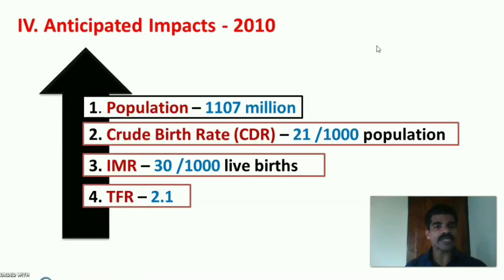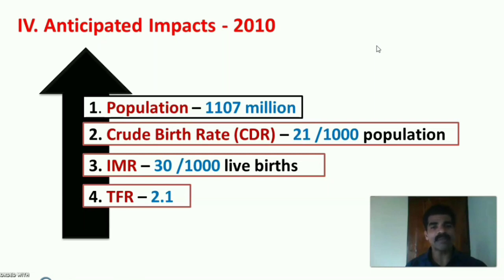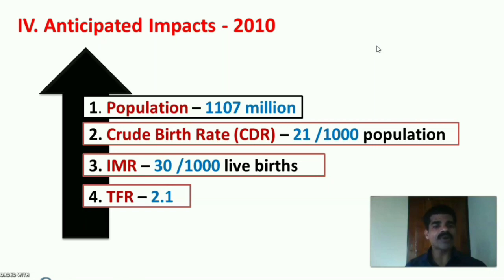Anticipated Impacts of National Population Policy 2000 by 2010: Population to reach 1107 million; crude birth rate (CBR) of 21 per 1000 population; infant mortality rate of 30 per 1000 live births; and total fertility rate (TFR) at replacement level of 2.1.